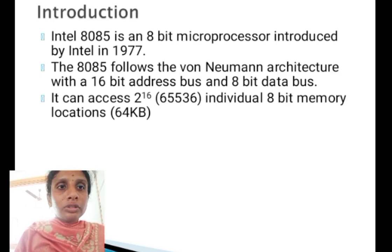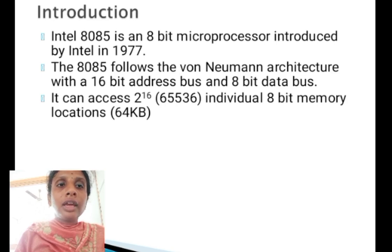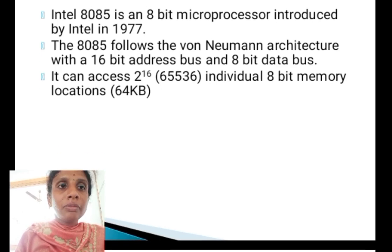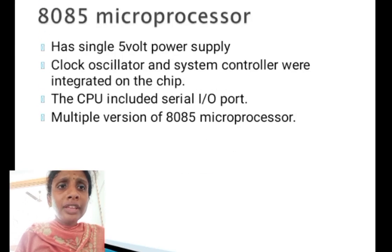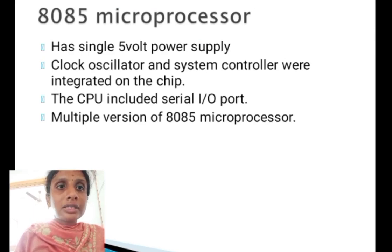The 8085 follows the Von Neumann architecture with a 16-bit address bus and 8-bit data bus. It can access 65,536 individually addressable 8-bit memory locations, that is 64 KB. The 8085 microprocessor has a single 5V power supply, clock oscillator, and system controller integrated on the chip.